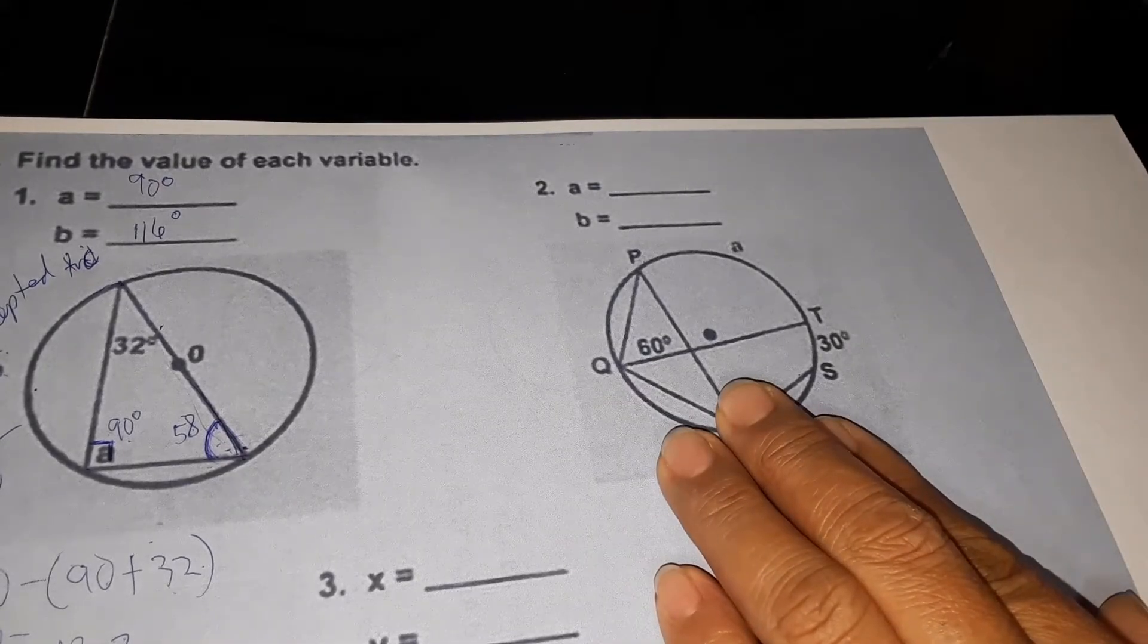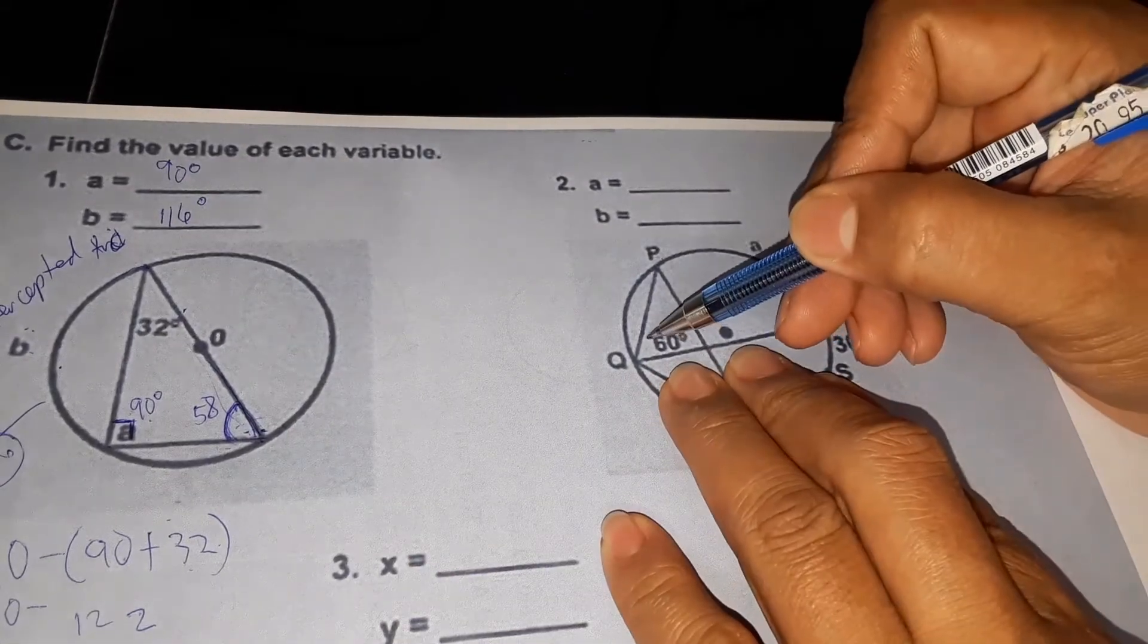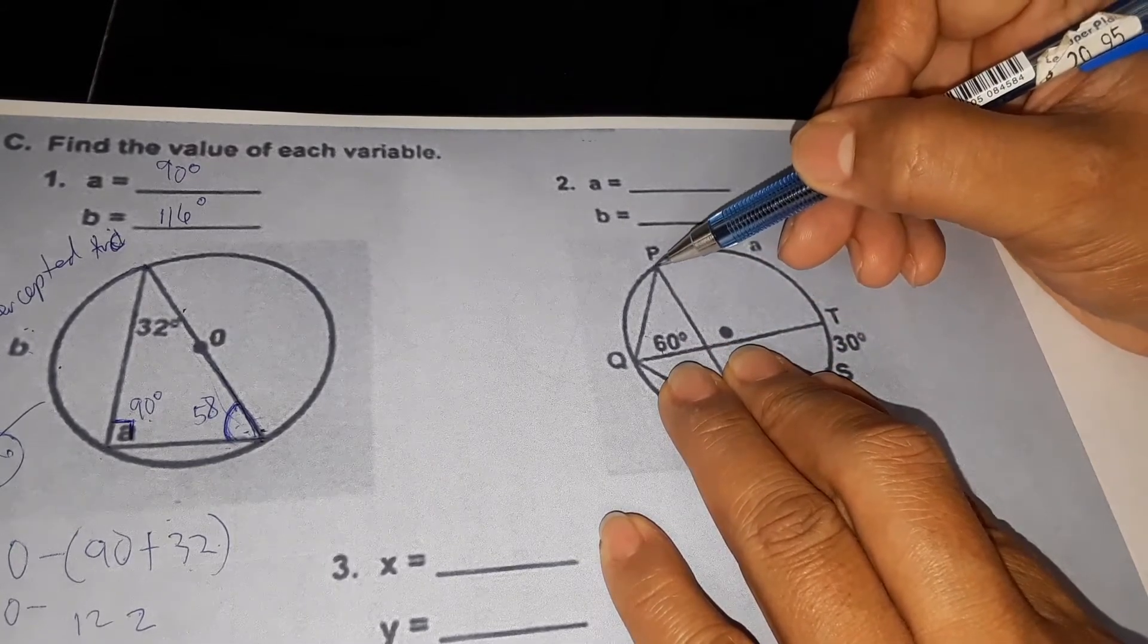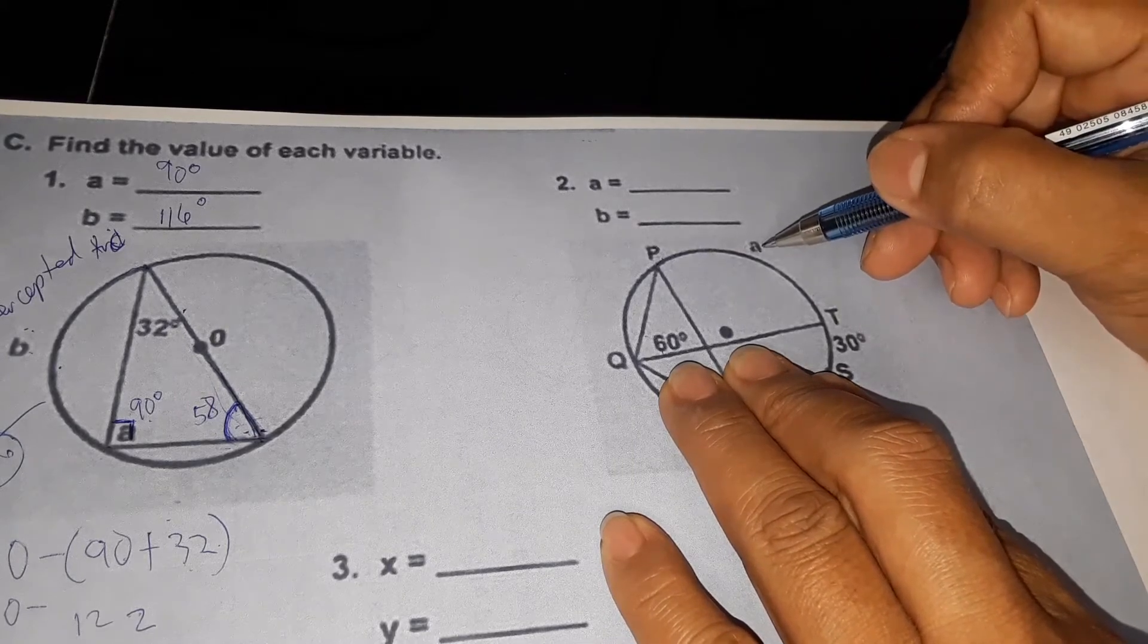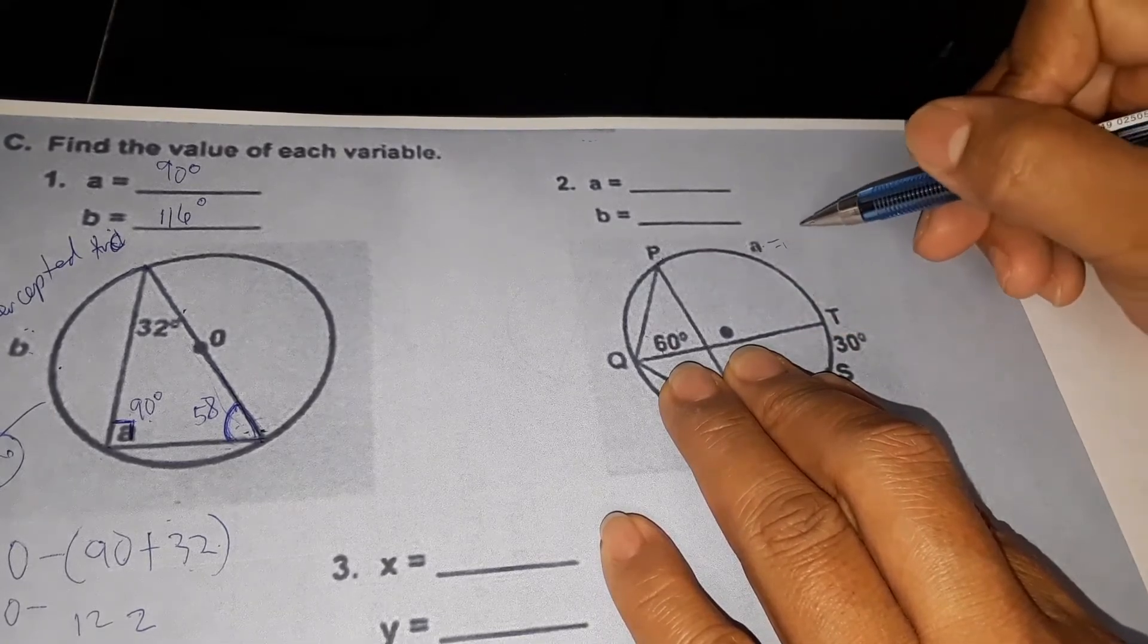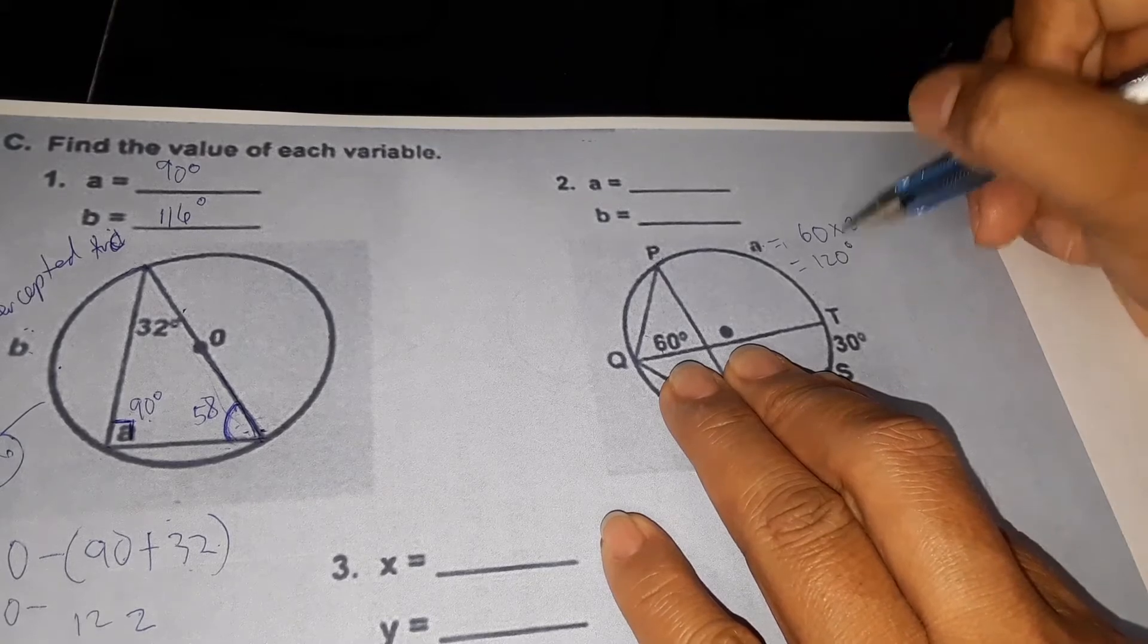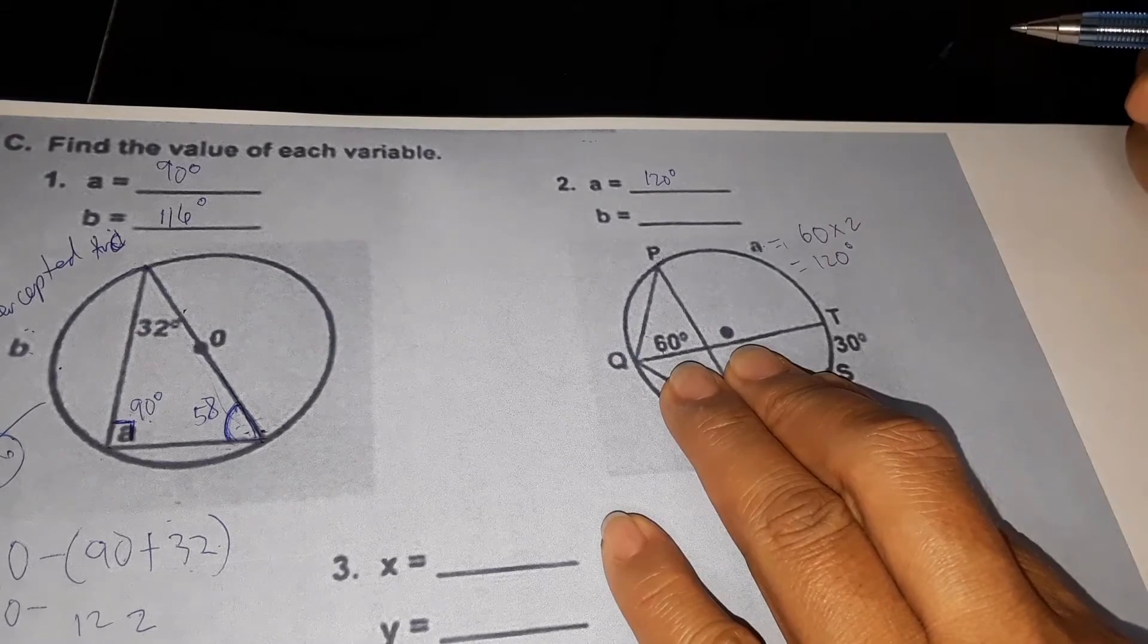Angle 60 is an inscribed angle and its intercepted arc is PT, which is our A. Since the inscribed angle is 60, then A is 60 times 2. So 60 times 2 we have 120 degrees. Therefore A is 120 degrees.